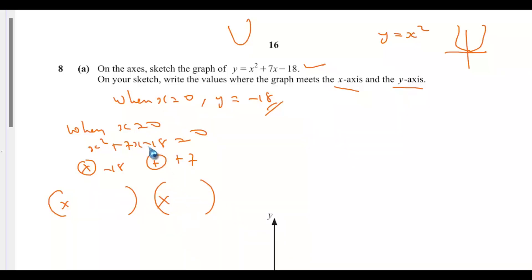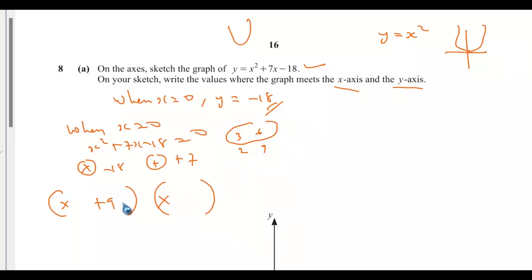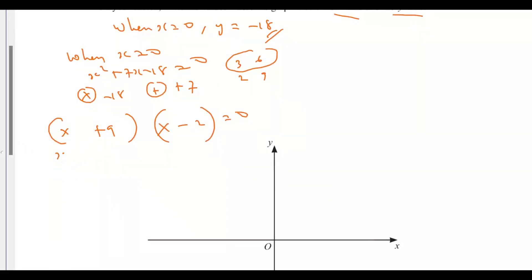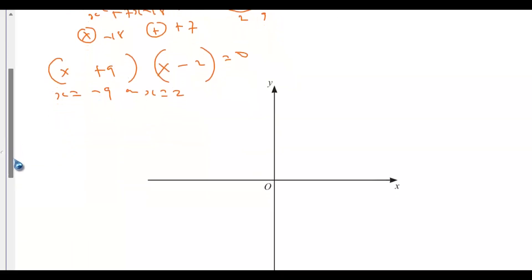We need factors of 18 that add up to 7. The pairs are 3 and 6, and 2 and 9. The pair that gives us plus 7 is 9 and 2, so the factorization is (x + 9)(x − 2) = 0. Solving: x equals negative 9 or x equals positive 2.